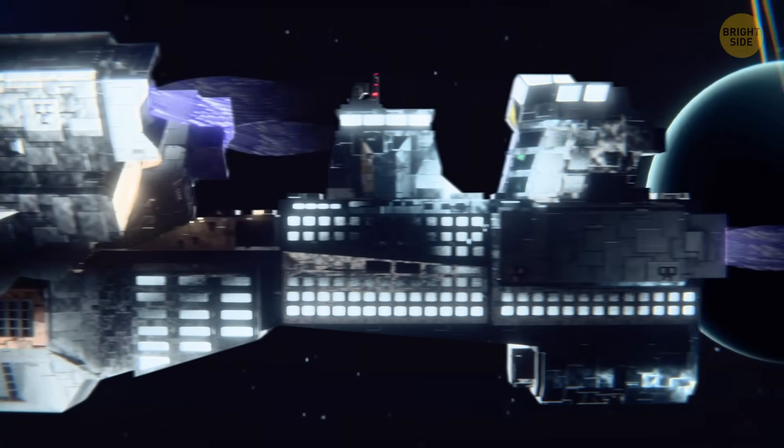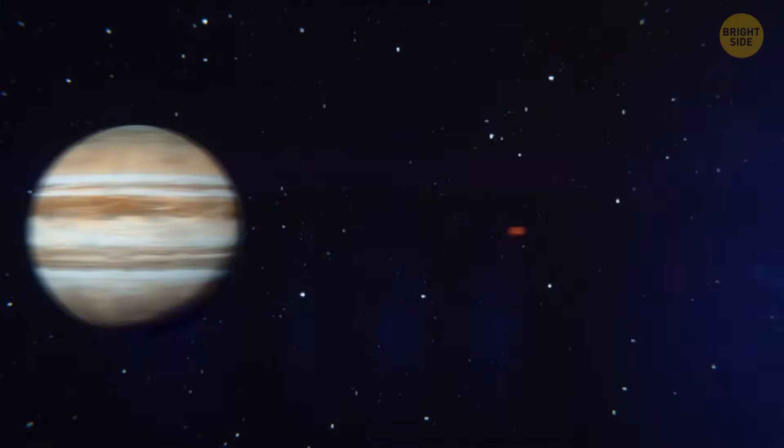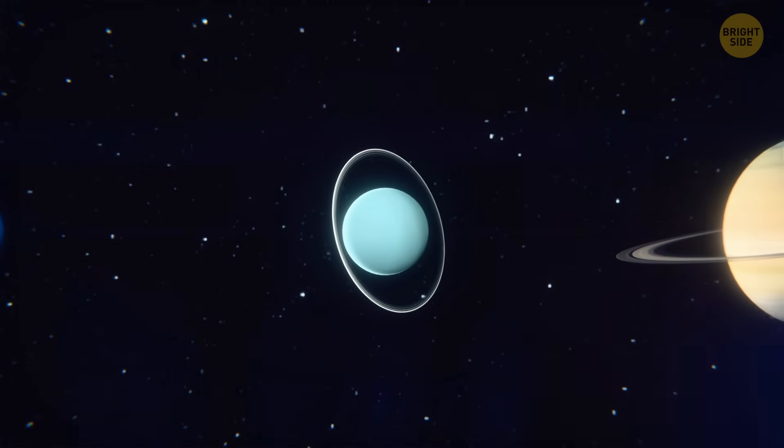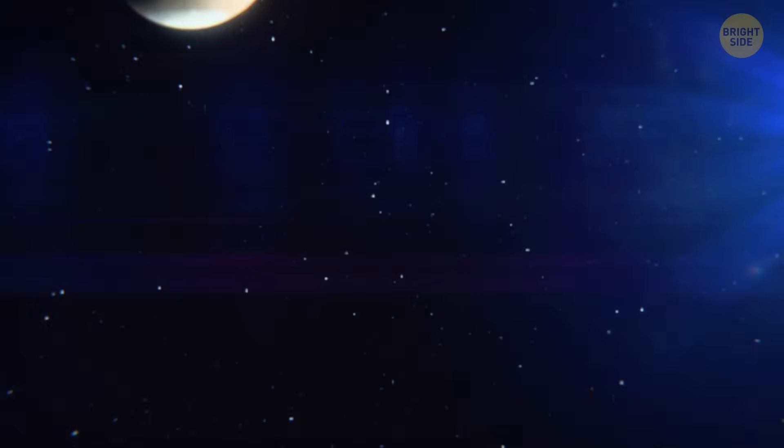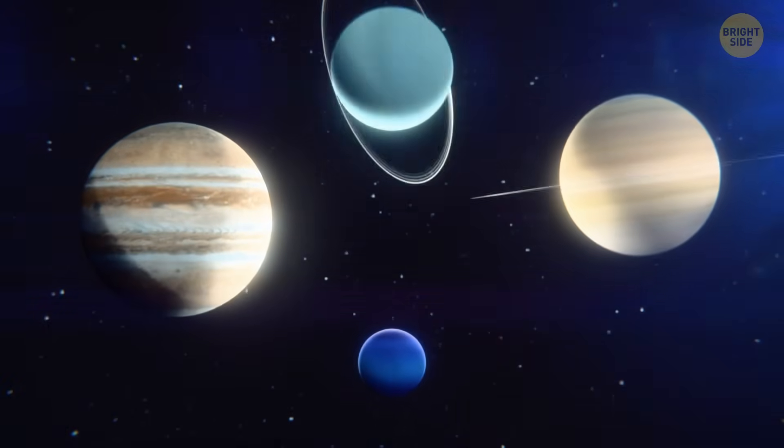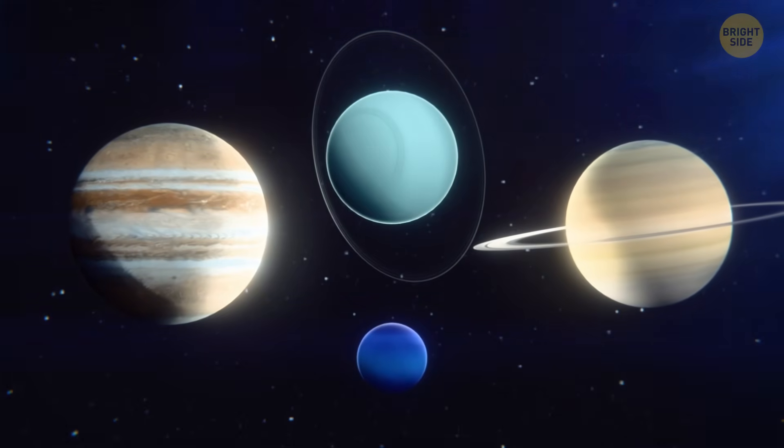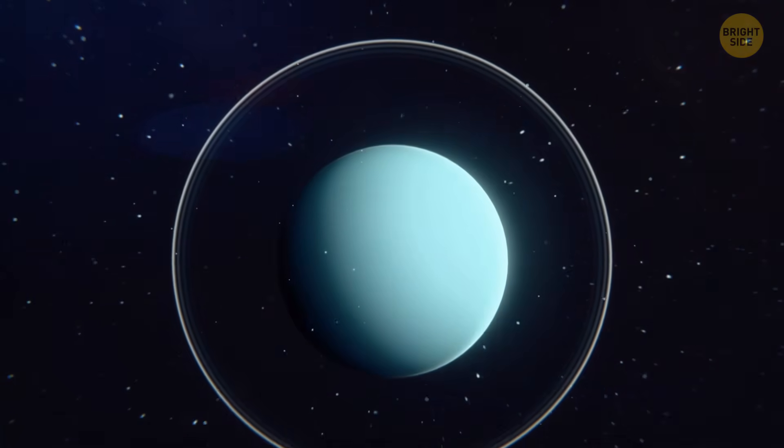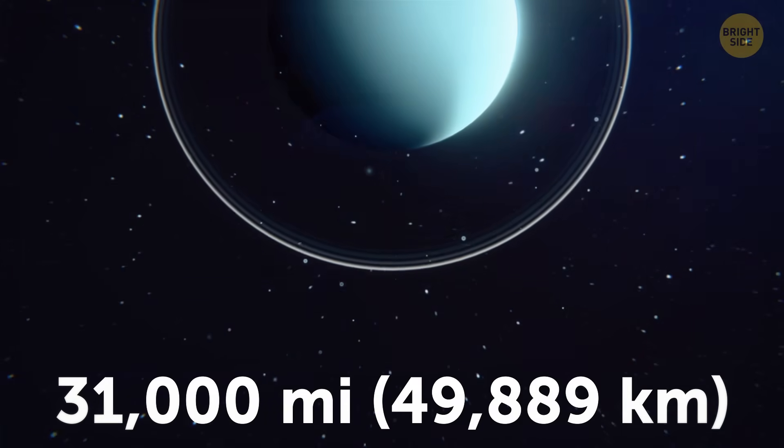Let's find out. First, Uranus, the seventh planet from the Sun, is a cosmic oddball and source of many jokes. It's one of the gas giants in our solar system, along with Jupiter, Saturn, and Neptune. It's also the third largest planet in our solar system, with a diameter of about 31,000 miles.